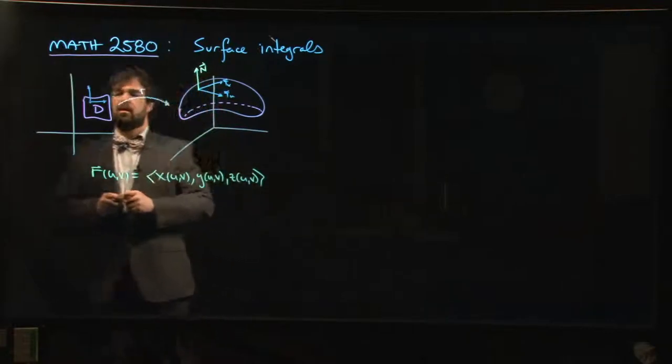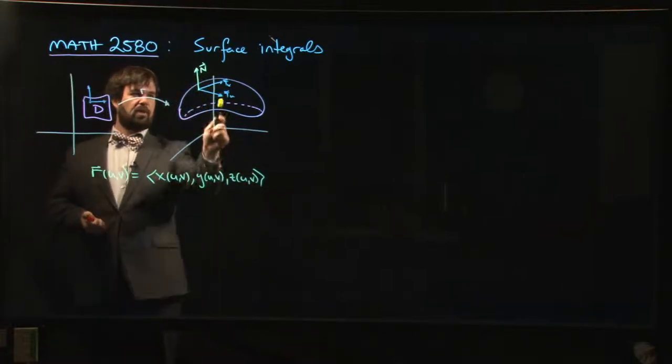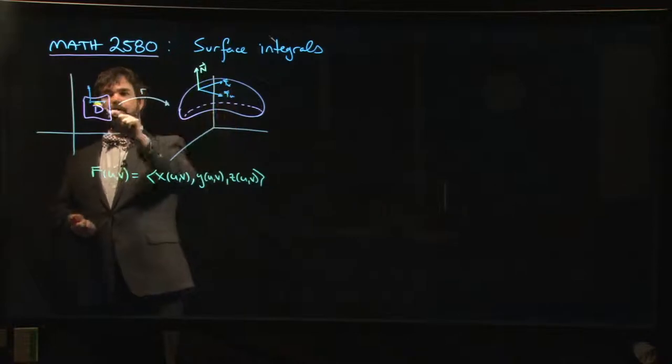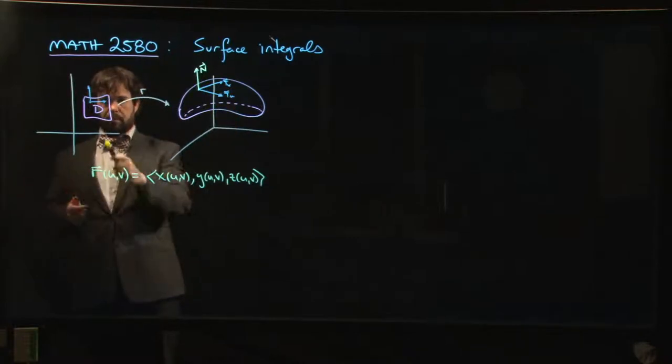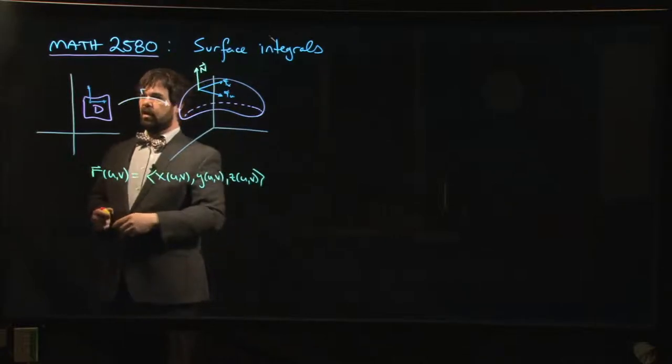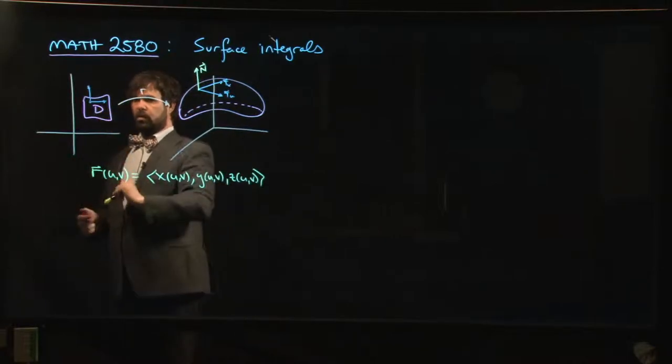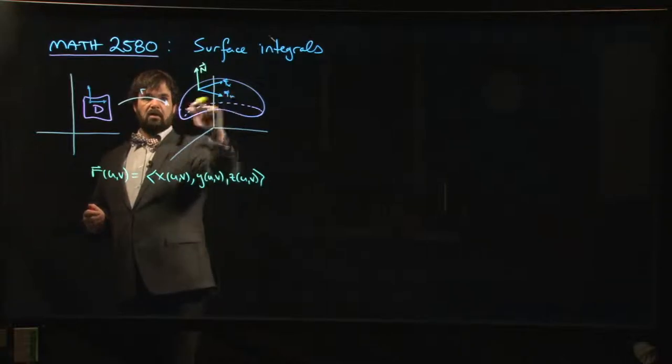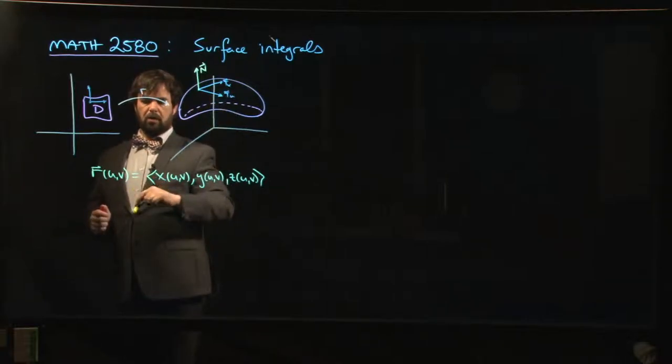And so then once you have this function, then of course every point on the surface corresponds to some point in whatever the parameter domain is, the domain d for this function. And the kind of natural Cartesian grid system that you have over here in the plane creates a grid system over here.